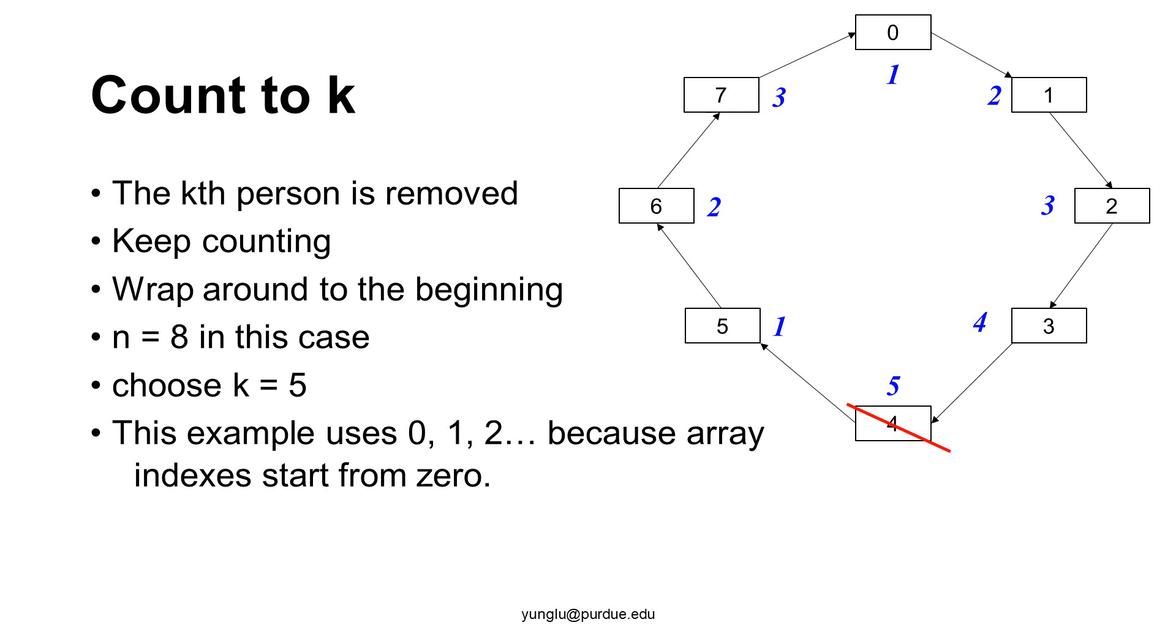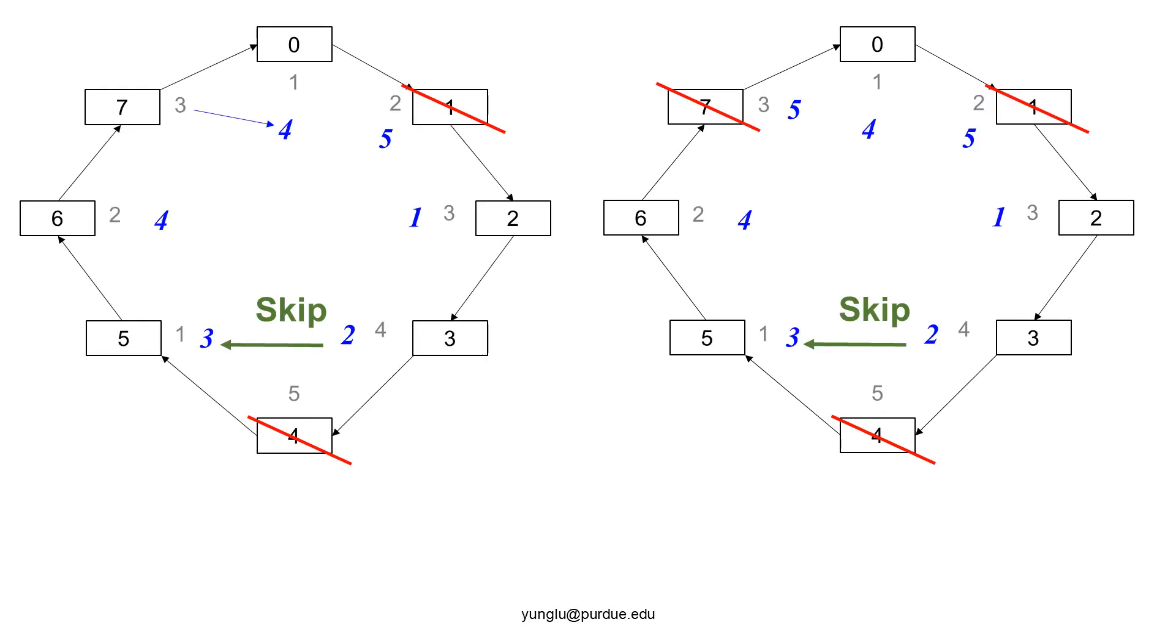After removing this person, we continue counting from 1, 2, 3. They correspond to the indices of 5, 6, and 7. Then we need to wrap around to index 0. The counts are put into the inner side of the circle. Index 0 is now counted as number 4. Index 1 is counted as number 5 and removed. We restart from 1.